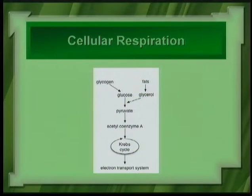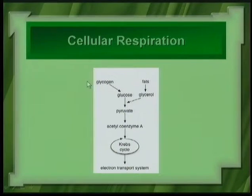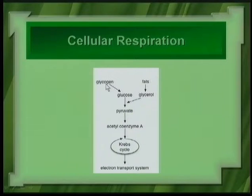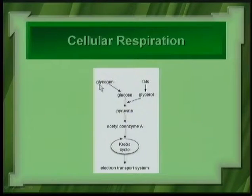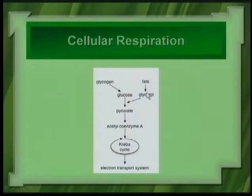Next we'll get into cellular respiration. In humans and other animals, we store energy as glycogen in our liver and muscle cells, then our bodies break down glycogen to form blood sugar — glucose. Fats can also be broken down into glycerol and fatty acids and enter this series of reactions. What happens during cellular respiration? First, you have glycolysis, then the Krebs cycle, then the electron transport system.